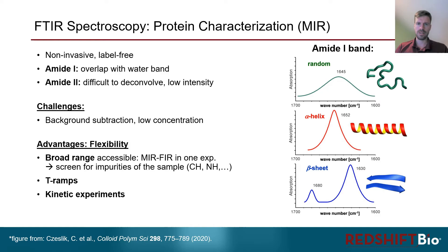The amide-1 band has a higher overall intensity and the bands from different structures are more spread out in frequency. On the other hand, amide-1 also overlaps with a water band, so perfect background subtraction is crucial, especially for low concentration samples. A general advantage of FTIR is its flexibility — it covers a broad frequency range, so the whole mid-IR region can be used for various types of applications and is not limited to proteins.